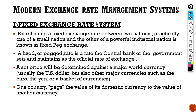A set price will be determined against a major world currency — usually the US dollar, but also other major currencies such as the euro, the yen, or a basket of currencies. So when a small nation's currency is pegged, it will be pegged either with the US dollar, euros, yen, or a basket of various currencies. One country pegs the value of its domestic currency to the value of another currency.